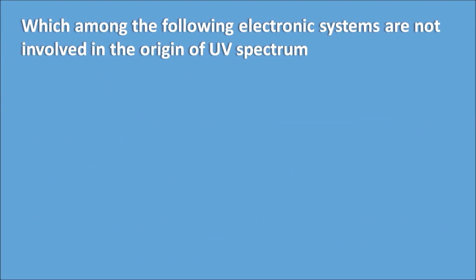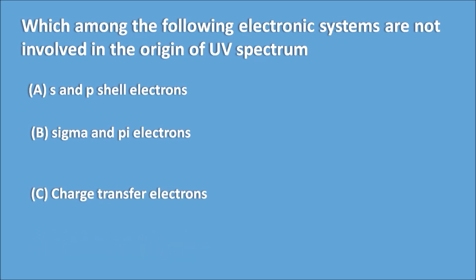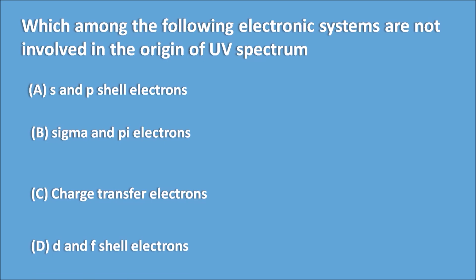Fifth question: Which among the following electronic systems are not involved in the origin of the UV spectrum? Options are: A) S and P shell electrons, B) sigma and pi electrons, C) charge transfer electrons, and D) D and F shell electrons.